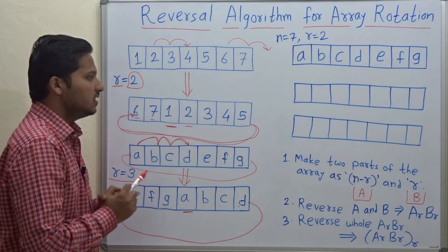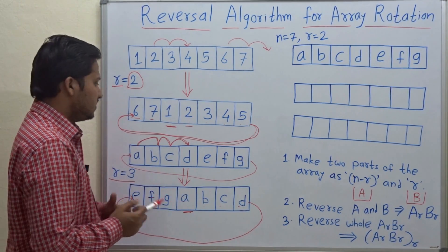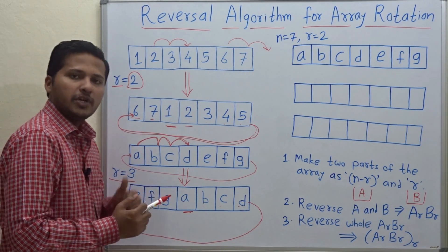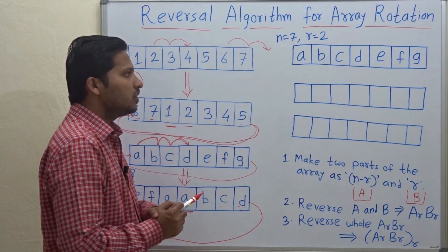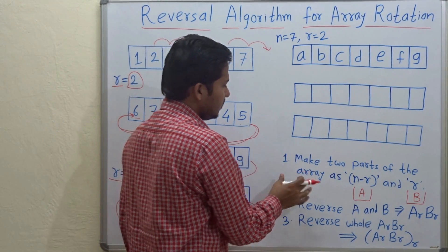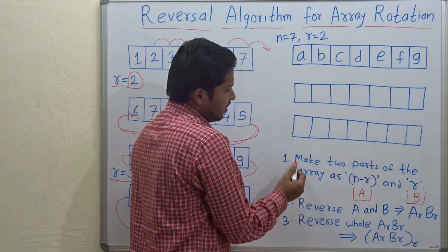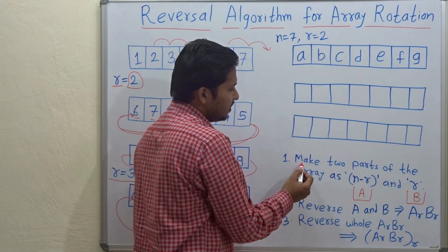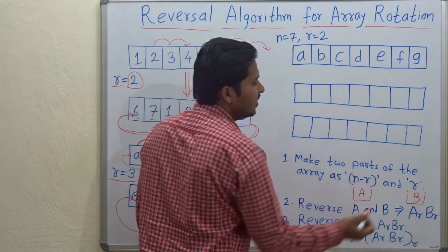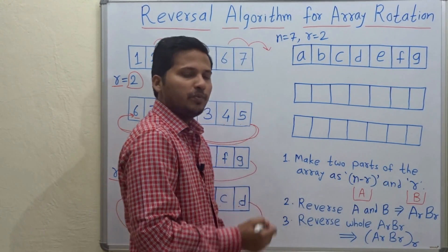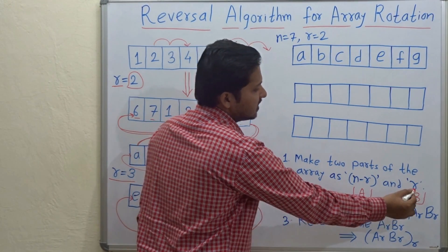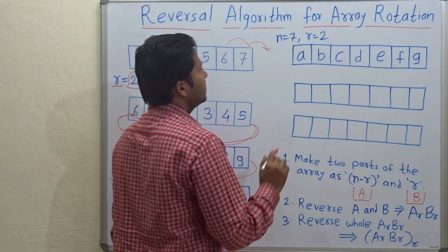Now we will see how to do this in a program. This is because this is a small input. We are able to do it just manually but we need an algorithm for doing big inputs. So let's see. See these are the steps. So what is the first step? First step is make two parts of the array as N minus R and R. These are the sizes of the two parts. The first part will be called as A and the second part will be called as B.